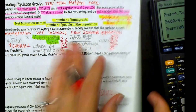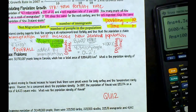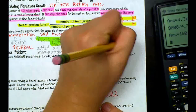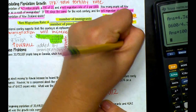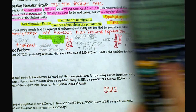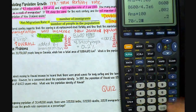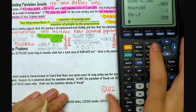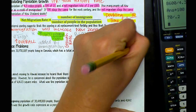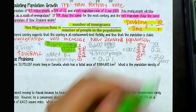Now for doubling time: 70 divided by r, which is 0.2. On the calculator, 70 divided by 0.2 gives 350 years. So it will take 350 years for New Zealand's population to double. Let's highlight that answer.